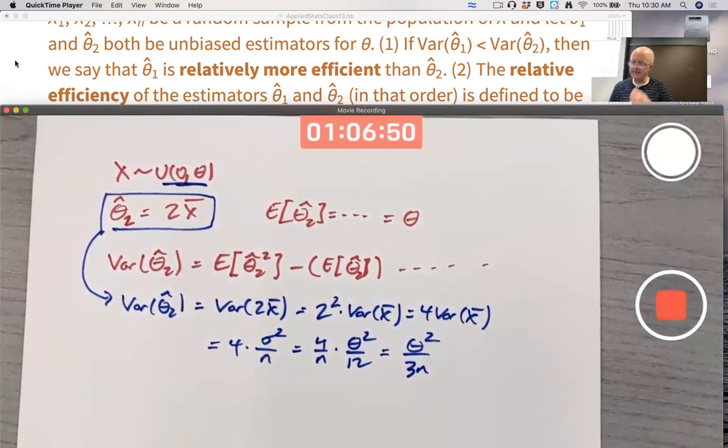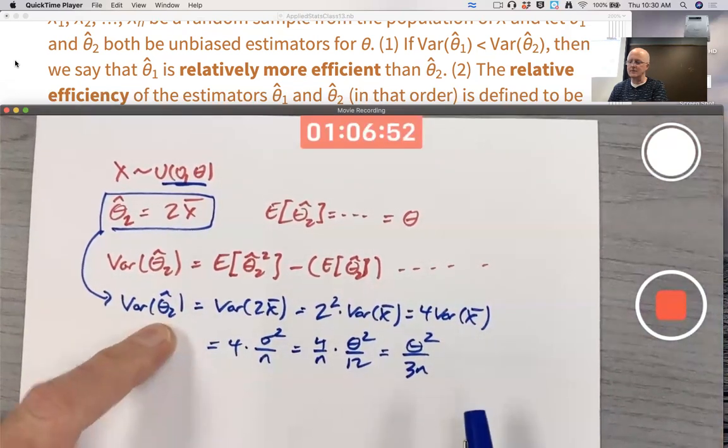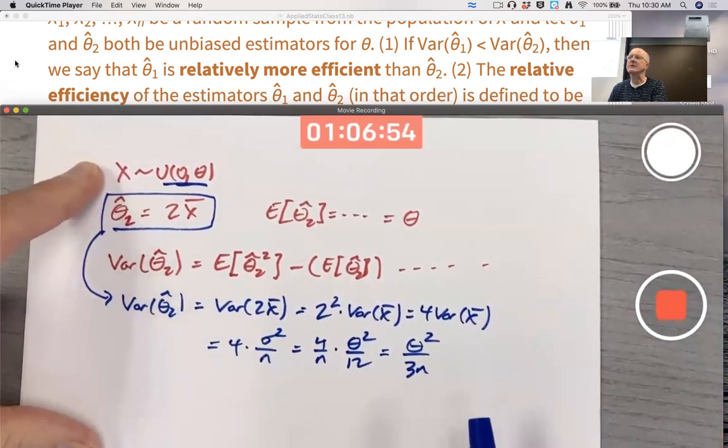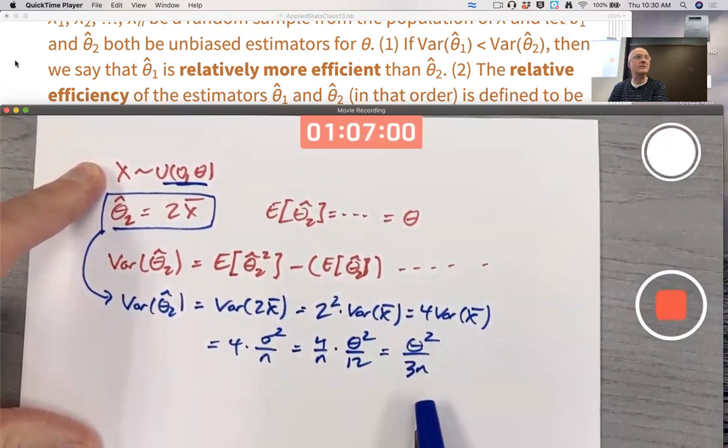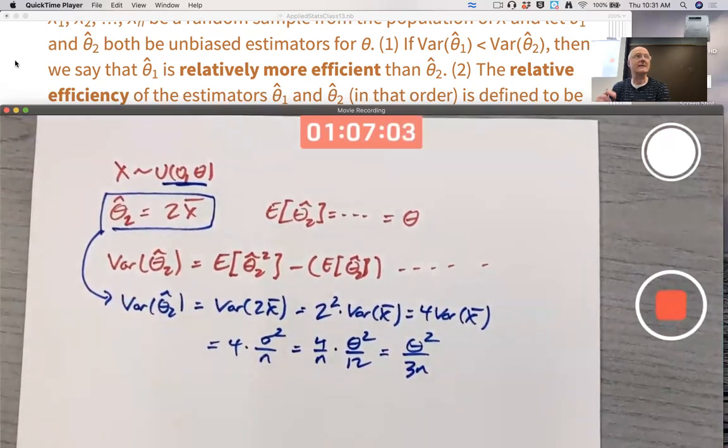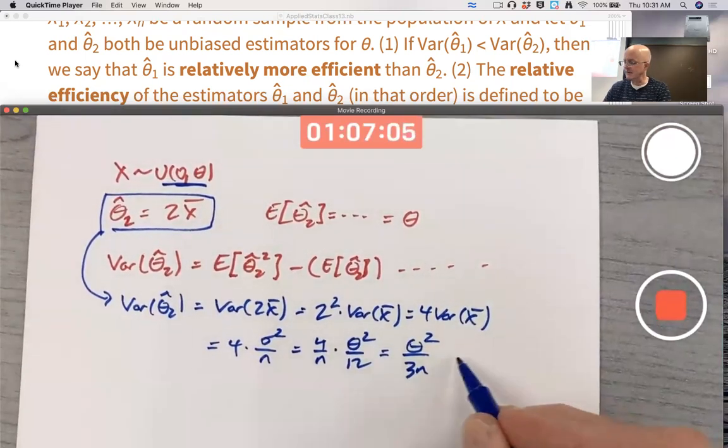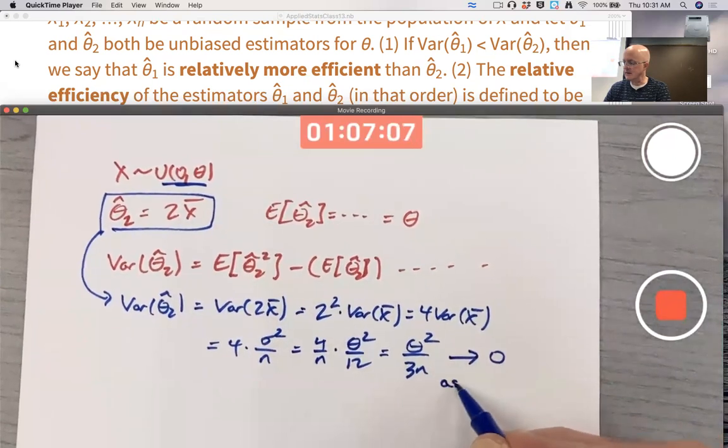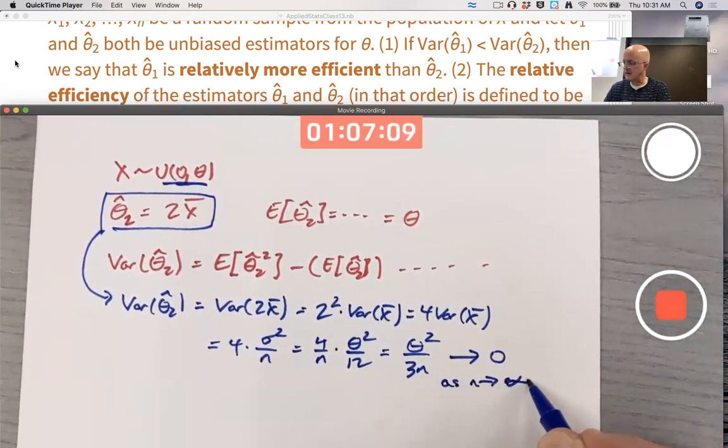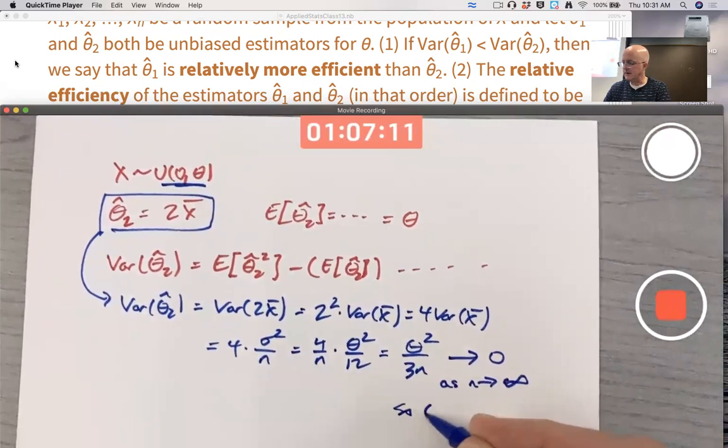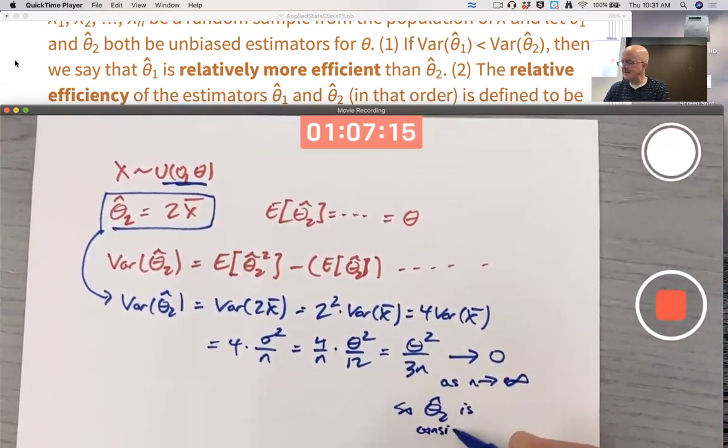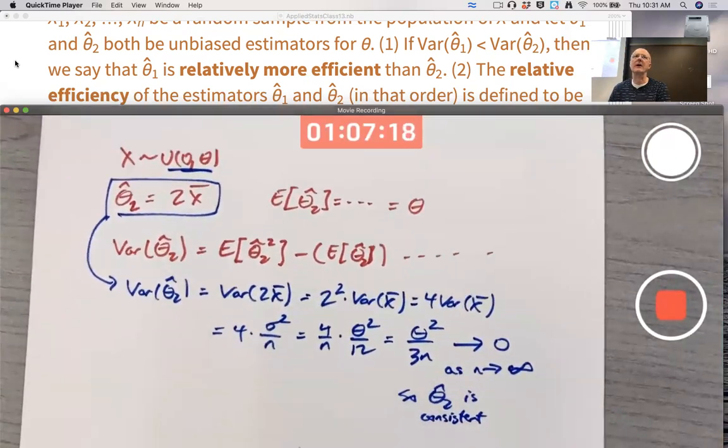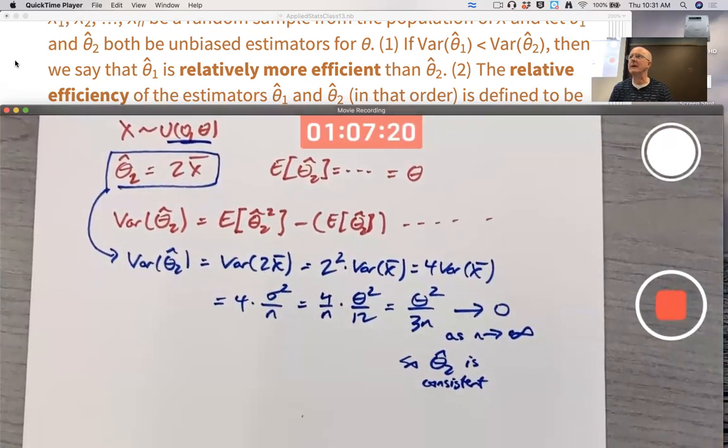Simplifies here then to theta squared over 3n. So that's the variance of this estimator. 2 times X bar in this situation. It does go to 0 as n goes to infinity. That's nice. That means it's a consistent estimator. Theta 2 hat is consistent. But that's not our end goal in this problem. In this example, we're trying to figure out its relative efficiency compared to theta 1 hat.